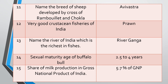Question twelve: Best crustacean fishery of India. Which crustacean is best? Answer: Prawn. Question thirteen: Name the river of India richest in fishes. Answer: River Ganga.